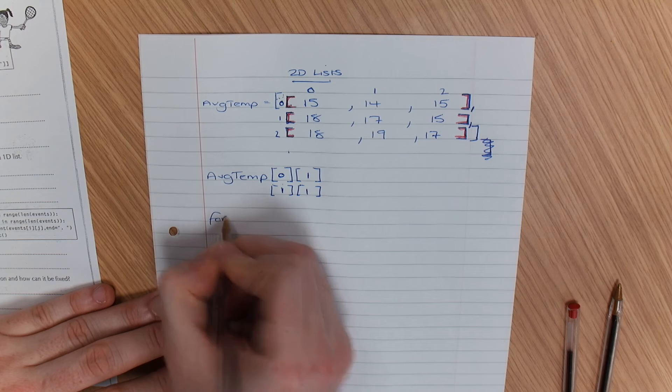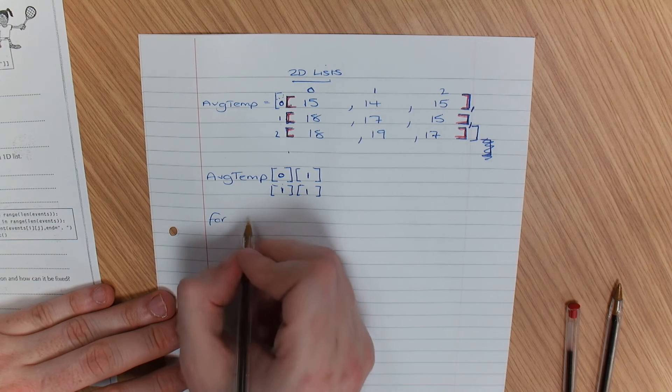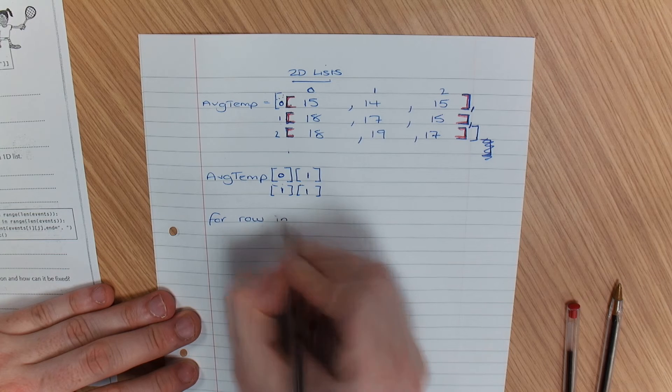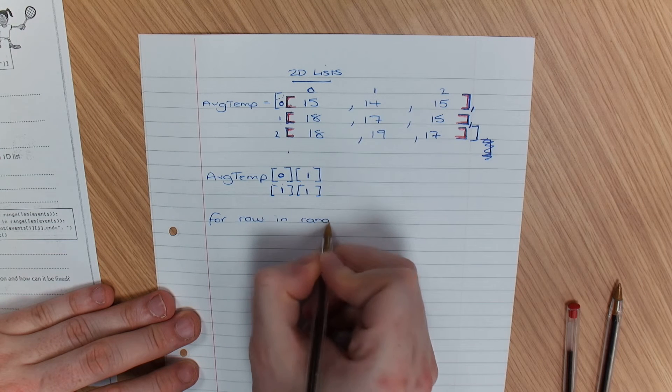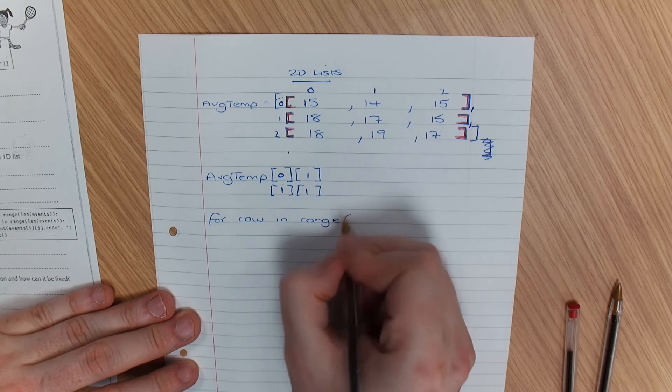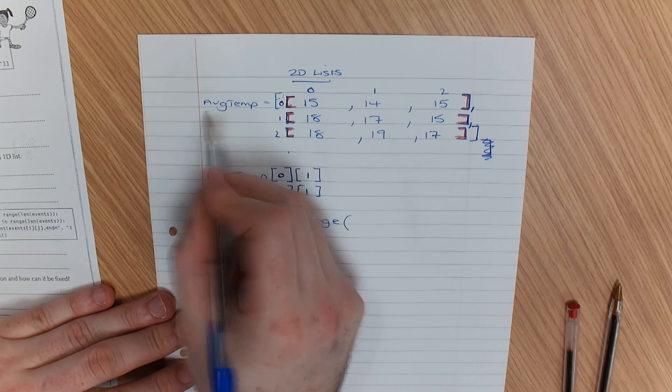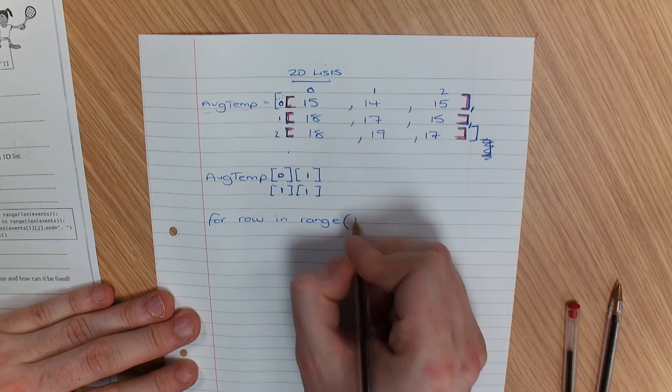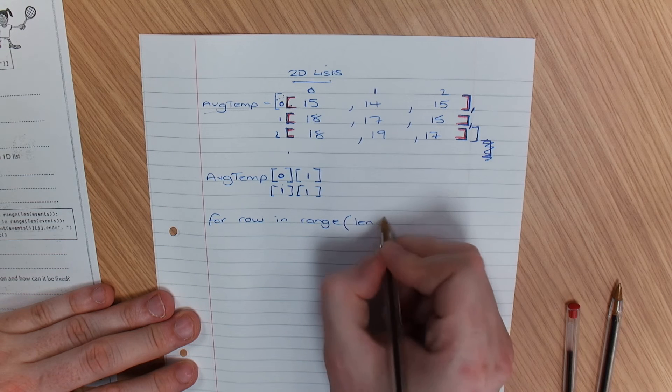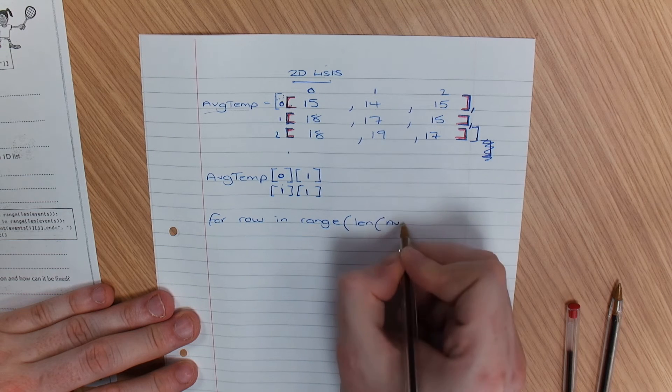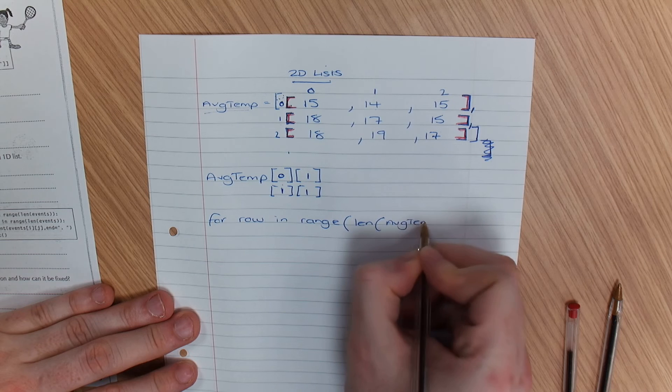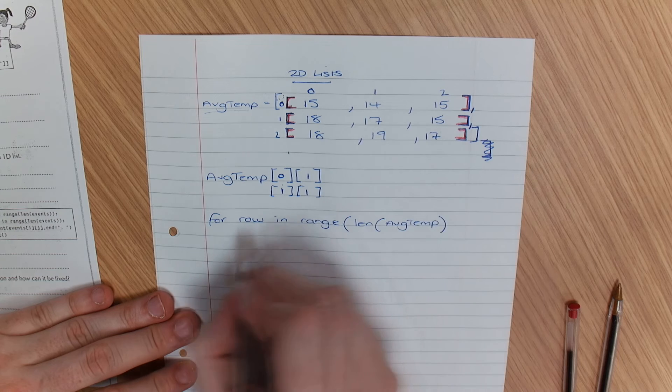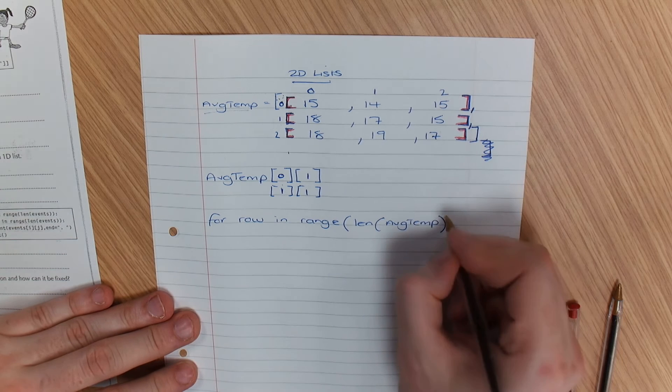for row in range, and I can find the length of this. So we're going to go for len of average temp. And I need to close my brackets there.